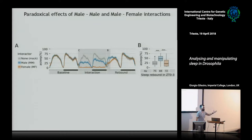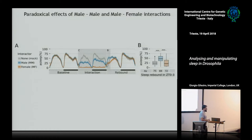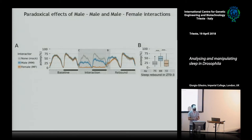So the male-female interaction, even though the sleep deprivation is very efficient, does not lead to a rebound — and that was the initial finding. It was very puzzling. It tells you two things: first, you can modulate sleep with social cues; but most importantly, those social cues can also modulate how the body responds to sleep loss. This makes a direct link between social interaction and the process of sleep homeostasis.